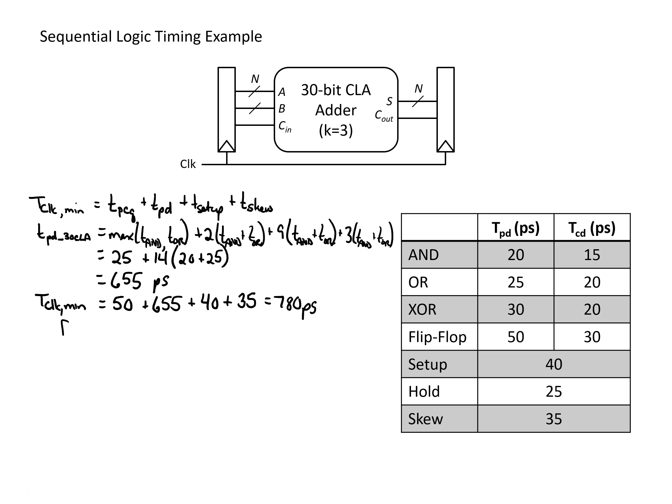A lot of times we're interested in the maximum frequency that we can run a circuit at, and the maximum frequency is just the inverse of the minimum clock period. In this case we could find that we could run this circuit at 1.28 GHz. We could certainly run at a slower frequency, but we could not run it at a higher frequency and still meet our timing.